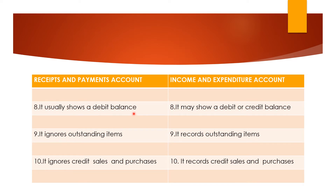Receipt and payment account usually shows a debit balance — it is just like a cash book, which is why it generally shows a debit balance. But the income and expenditure account may show either a debit balance or a credit balance.